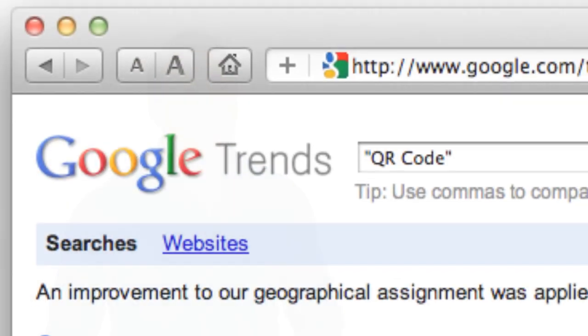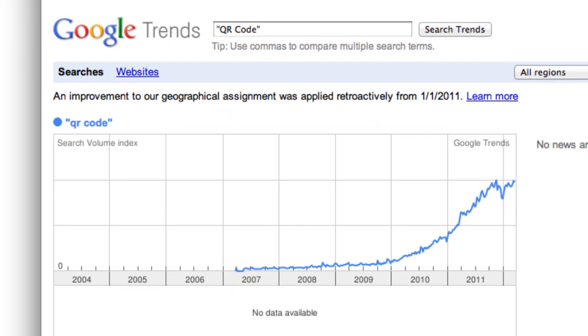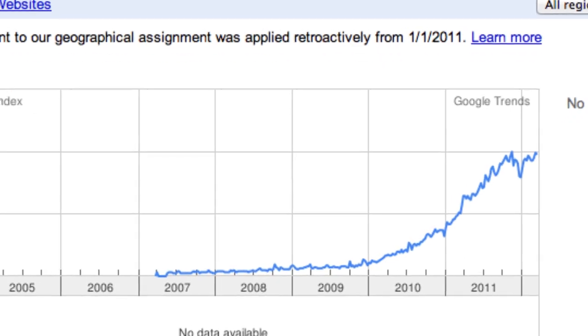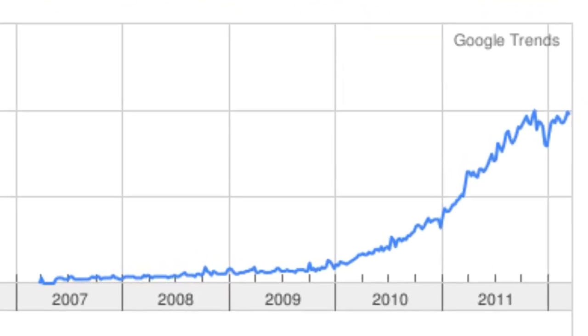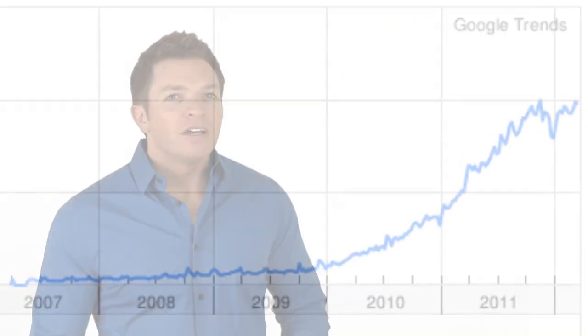Scanning these codes instantly displays information or takes you to a website. Now, QR codes have been around since 1994. Why is it that they have recently become so popular? Why the surge in popularity? Well, I'd say it's because now people are carrying around tiny scanners with them all the time. They're mobile phones.